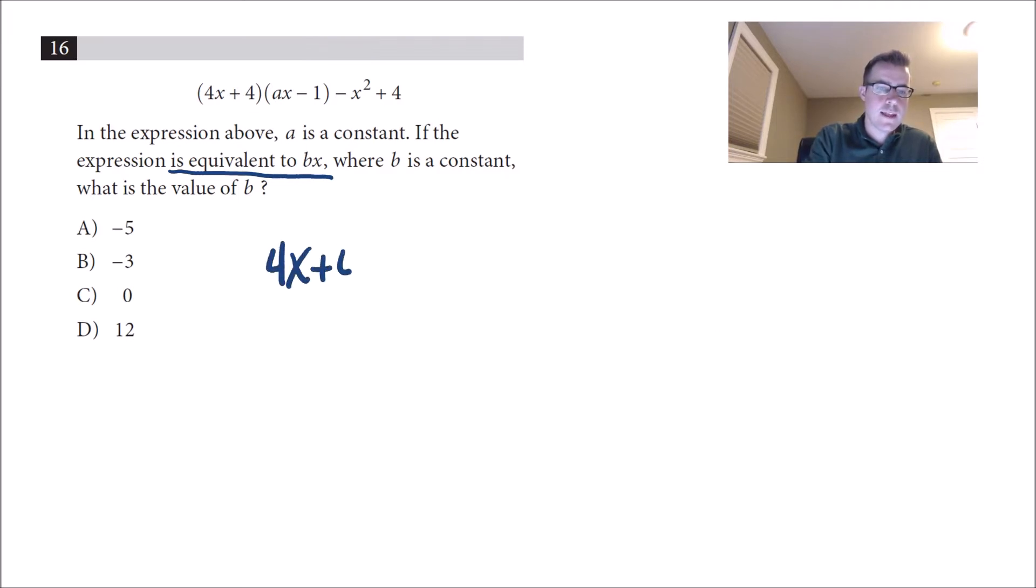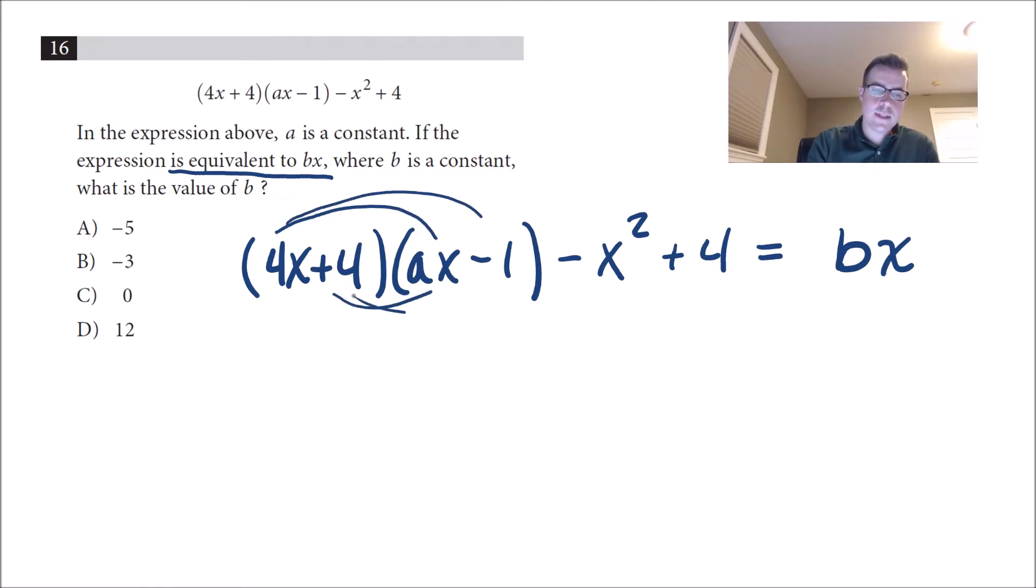So I'm going to rewrite this: 4x plus 4 times ax minus 1 minus x squared plus 4, that's going to equal bx. Next thing here, I'm going to go ahead and distribute this through or foil this out.